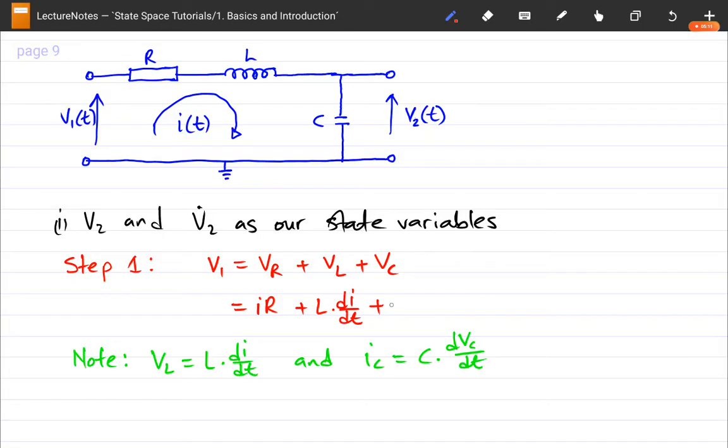So VL is L di/dt. Notice that since this is a series circuit, the I across this inductance is the same I across this capacitance, the same I across that, it is this I of t. So that I is very general. So we have said that our state variable must be V2. So I hope you can notice that V2 is actually equals to VC and VC is over here. So V2 equals VC.